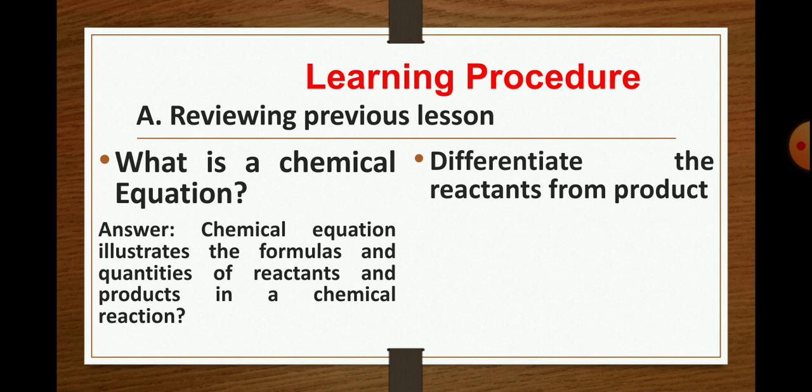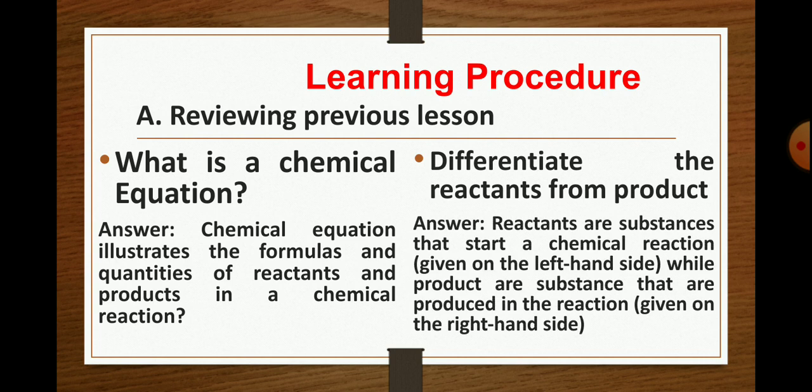Since you mentioned about reactants and product, may I call Angela to differentiate between the two. Is there any difference between reactant and product? Okay Angela, that is a correct answer. You said that reactants are substances that start a chemical reaction and that is written on the left hand side, while the products are the substances that are produced in the reaction or given in the right hand side after the reactions have been reacted. Remember, reactants are always written in the left hand side and that is separated by an arrow, and the product is always written on the right hand side.